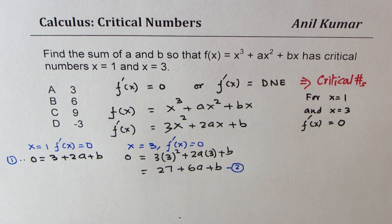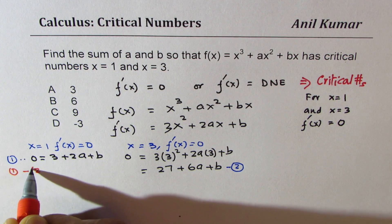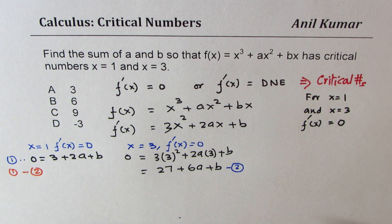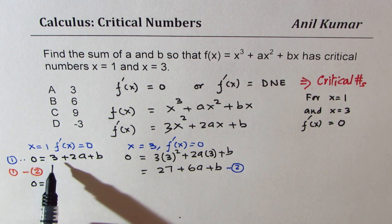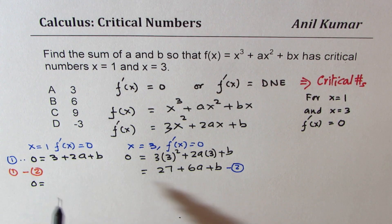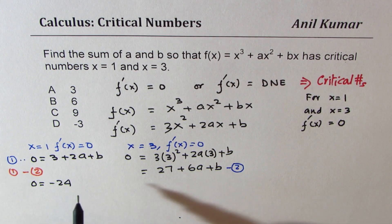So if I do equation 1 take away 2, I get 0 = -24 from 3 minus 27, and -4a from 2a minus 6a, and b minus b is 0.